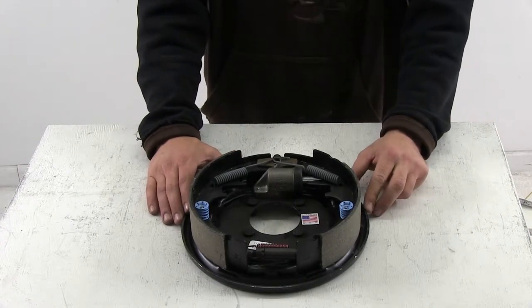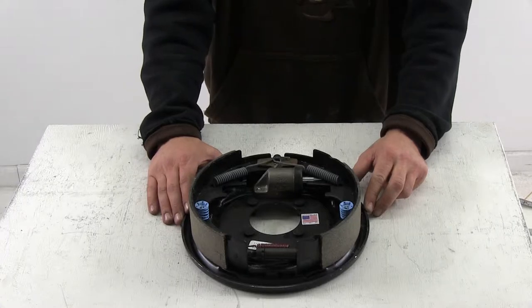Today we're looking at the Dexter 10 inch hydraulic brake assembly, part number 23-313.